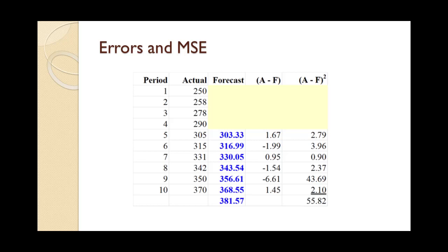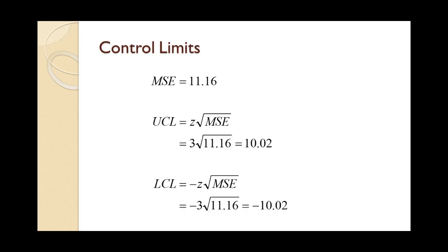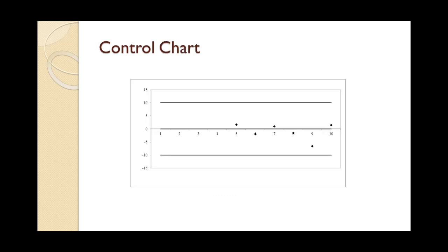The squared errors sum to 55.82. There are six points used to calculate it, so we divide by n minus 1 equals 5 to get the mean squared error of 11.16. Given that z equals 3 and the mean squared error equals 11.16, the upper control limit equals 10.02 and the lower control limit equals negative 10.02. We know the centerline equals zero. We now have everything we need to produce the control chart.